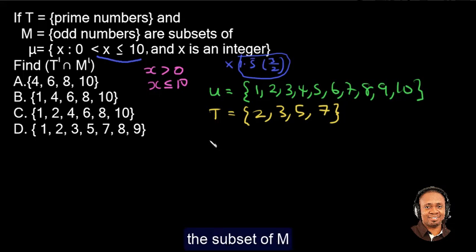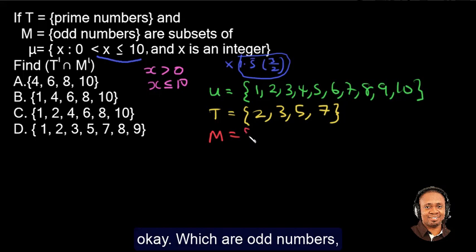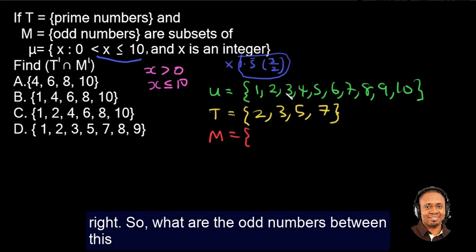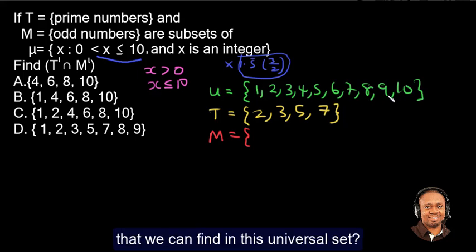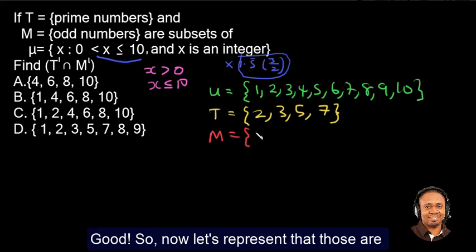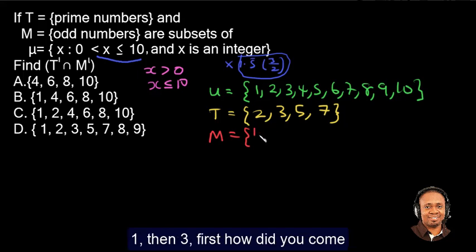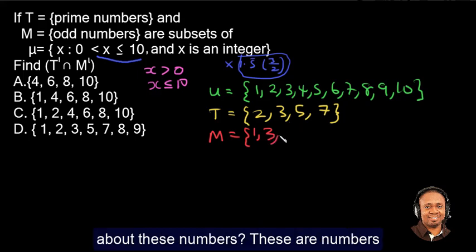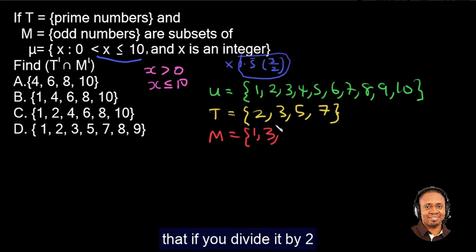So let's go to the subset of M, which are odd numbers. So what are the odd numbers that we can find in this universal set? Let me give you time. Have we got any? Good. So now let's represent that. Those are 1, then 3. First, how did you come about those numbers?